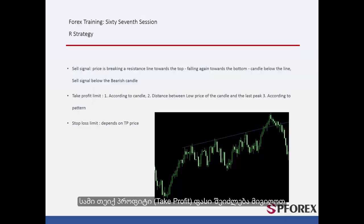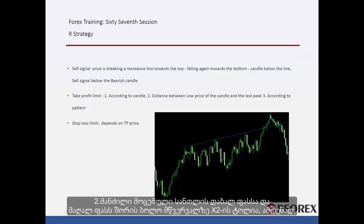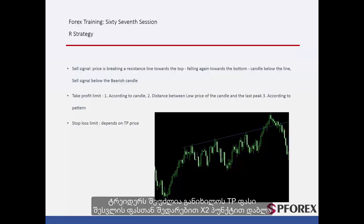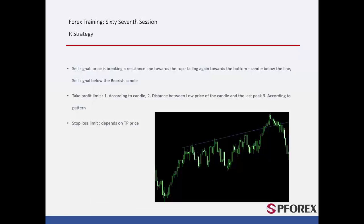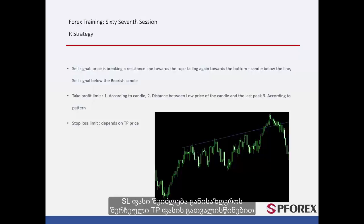Three take profit prices can be derived as follows. First, the length of the bearish candle that forms below the resistance line equals X1; the first TP price can be X1 pips lower than the entry price. Second, the distance between the low price of that candle and the high price of the candle on the last peak equals X2; a trader can consider TP price X2 pips lower than the entry price. Third, if a powerful pattern forms in this region, a trader can consider the third TP price via this pattern. SL price can be determined considering the TP price that the trader selects.